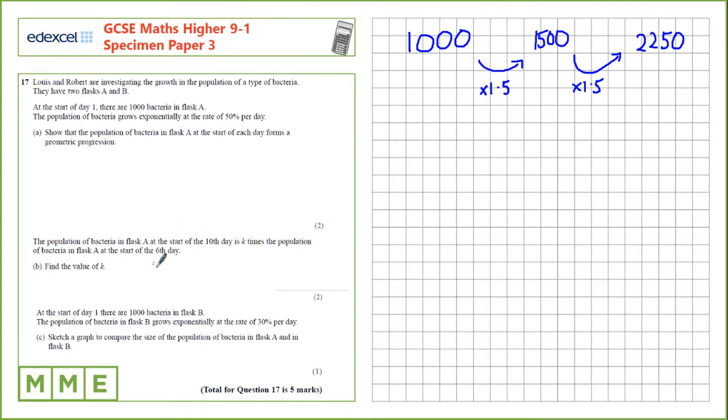At the start of the sixth day we have a thousand multiplied by 1.5 to the power of 6 for six days. We're given that this one is k times the amount on day 6. We're going to multiply that by k and set that equal to the amount on day 10. 1,000 times 1.5 to the power of 10.